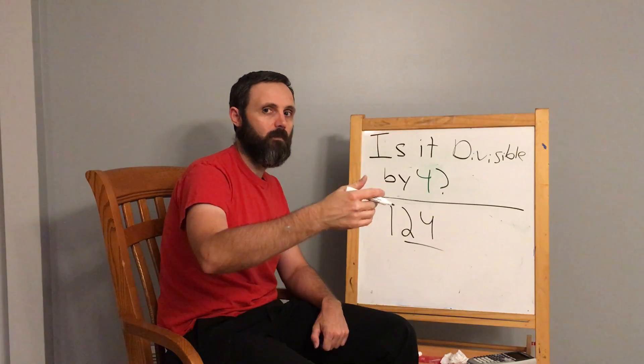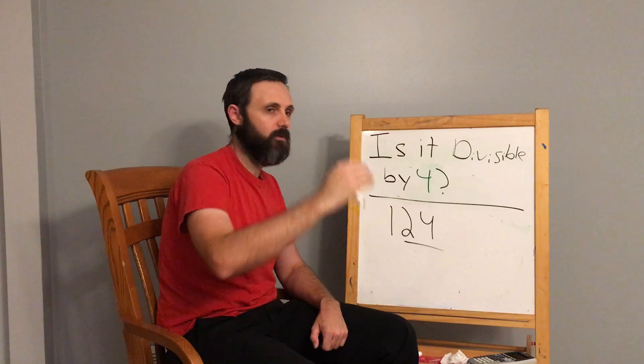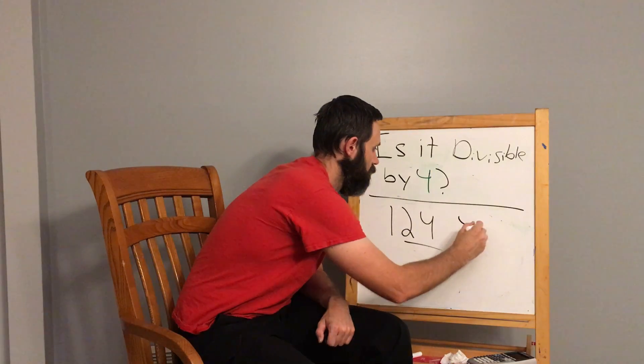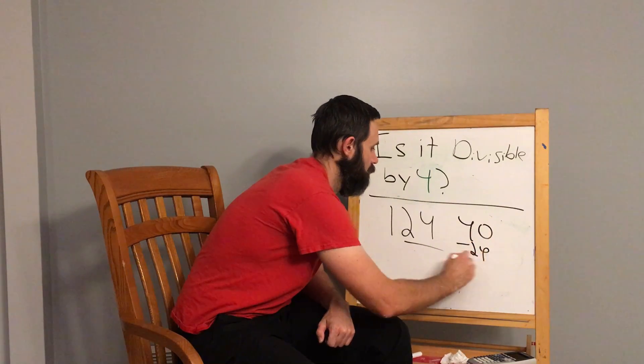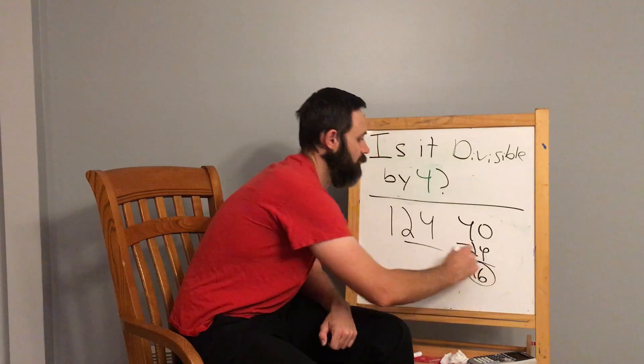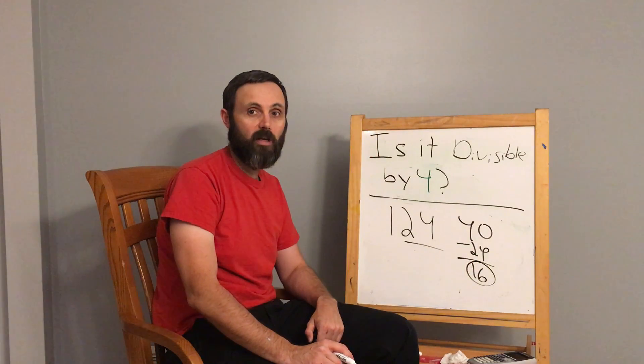0, 20, 40, 60, 80, 100—those even numbers. So 40 minus 24 is going to give us 16. 16 is a multiple of 4, so it will work.